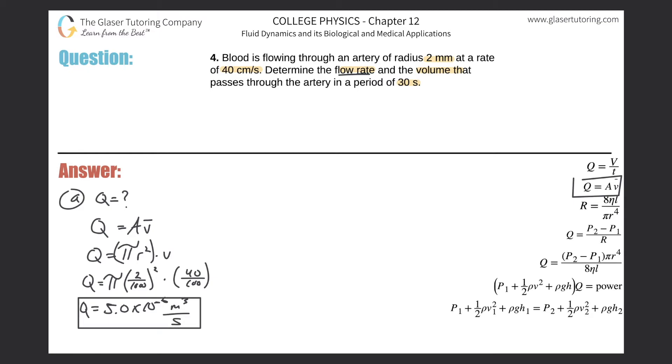Now letter b: determine the volume that passes through in 30 seconds. We can actually use the top formula here because this tells us the volume flow rate equals the volume of blood passing through a certain point per unit time. I want to calculate volume, so simply cross multiply. That would be equal to the volume flow rate multiplied by the time that has elapsed. We just know Q, we just found it.